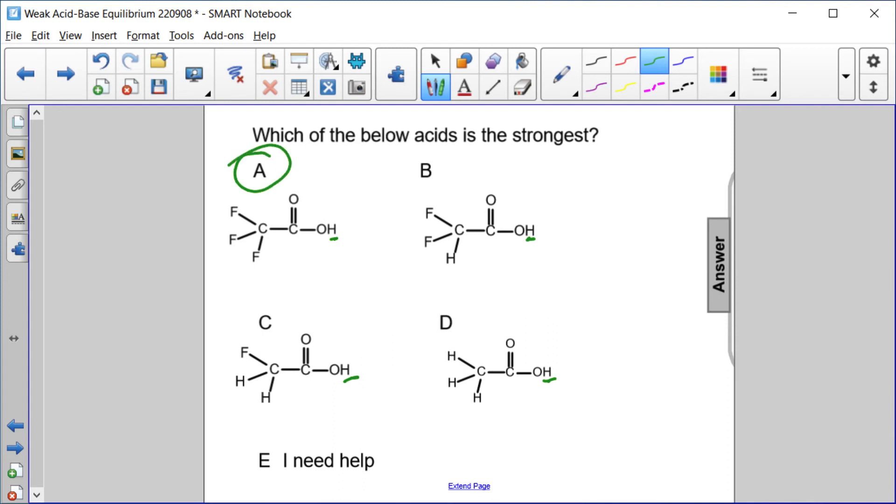So the answer here is A, the trifluoro acid. This is trifluoroacetic acid, would be the strongest because it has the most fluorine atoms that have the greatest electronegativity to pull the electron density away from that acidic proton, making it very easy to remove.